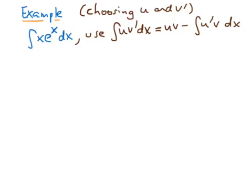In the integration by parts formula, the integrand is composed of a product, and the two terms — u and v prime — are treated very differently. The formula tells us that we have to differentiate u and integrate v prime. So when we make our choice and call one part u and the other v prime, one is going to be integrated and one is going to be differentiated. Now, if we were to take x and integrate it, we would have x squared over 2, which is likely to make the resulting integral worse than the initial one.